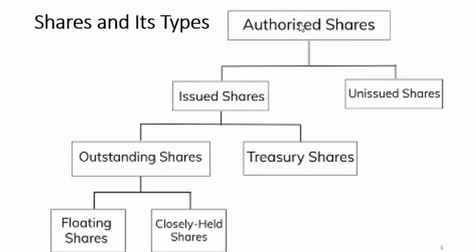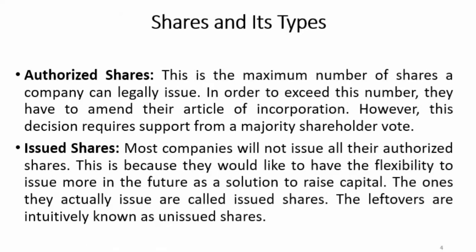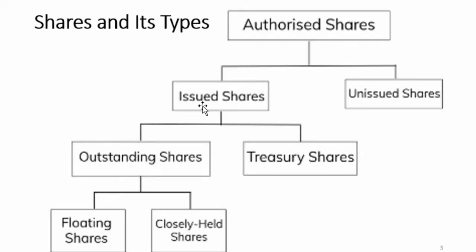So, authorized share capital is the concept of the maximum number of shares a company can be authorized to issue. As we have seen in the flowchart, the company's authorized share is the maximum number. If the limit needs to be exceeded, it will require special approval from the board of directors and other regulatory bodies to increase the authorized capital and number of shares.